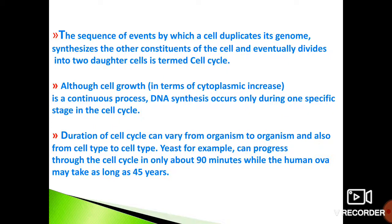In the cell cycle, cell growth occurs in terms of cytoplasmic increase. There is also the process of synthesis of components — synthesis of DNA, organelles, and the required enzymatic machinery that the cell needs before it can become two. It is something like dividing all the components at your disposal into two equal halves and then making a partition so that they become two compartments.